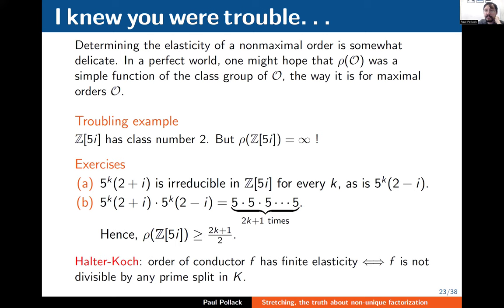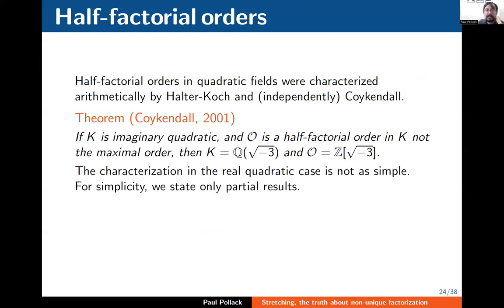What's going on? There's a theorem of Halter-Koch that if I'm looking at the order of conductor F, you get finite elasticity precisely when F is not divisible by any prime that splits completely in K. Here, 5 divides the conductor and 5 splits in Z[i] as (2+i)(2-i) — that's what goes wrong. This is just to show that elasticities of non-maximal orders are a somewhat exotic object of study. But you can still say something, and in fact there is an arithmetic characterization of half-factorial orders in quadratic fields, obtained independently by Halter-Koch and Quaresma.